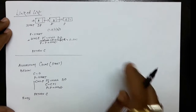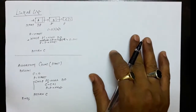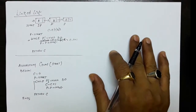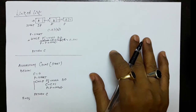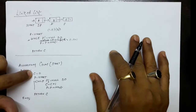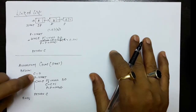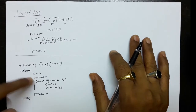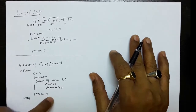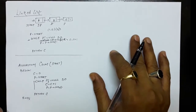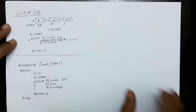Another test: if the linked list is null, it means the linked list does not contain any node, so you need to return 0. Starting with C equals 0 and P equals start — if start is null, P has also become null. So while P is not null, the entry condition itself has failed and you return C, which is 0. This is how you find out the count of nodes in the linked list.